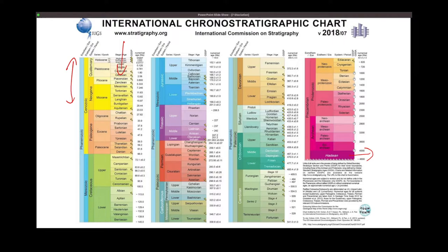During the Precambrian — the Hadean, Archean, and Proterozoic — we have less and less information on the significant events that happened. That's how your geologic time scale works. This chart is the Geologic Time Scale, or GTS, done by the International Commission on Stratigraphy — the standard GTS used by all geologists around the world for uniform reporting of geologic time events.